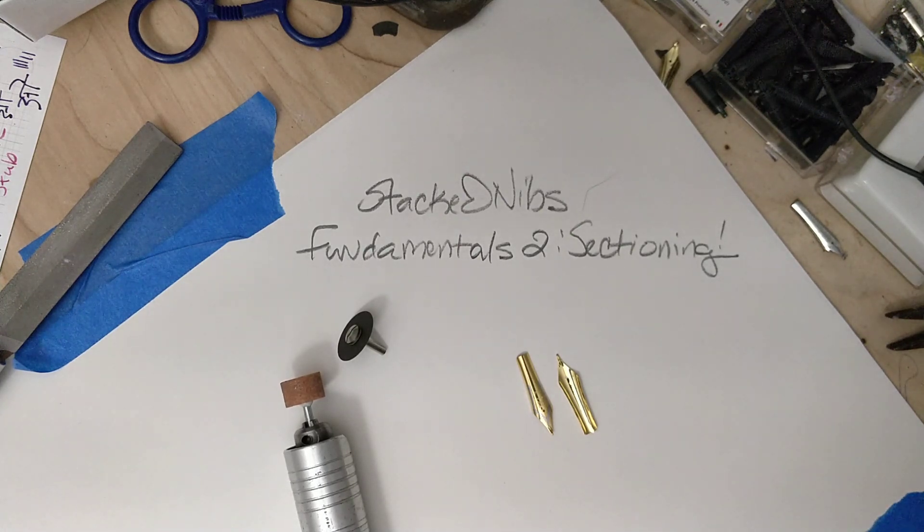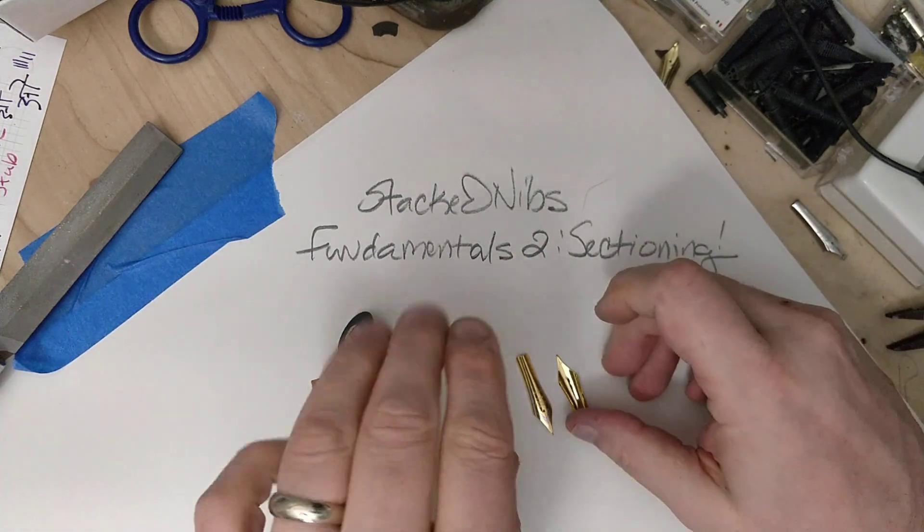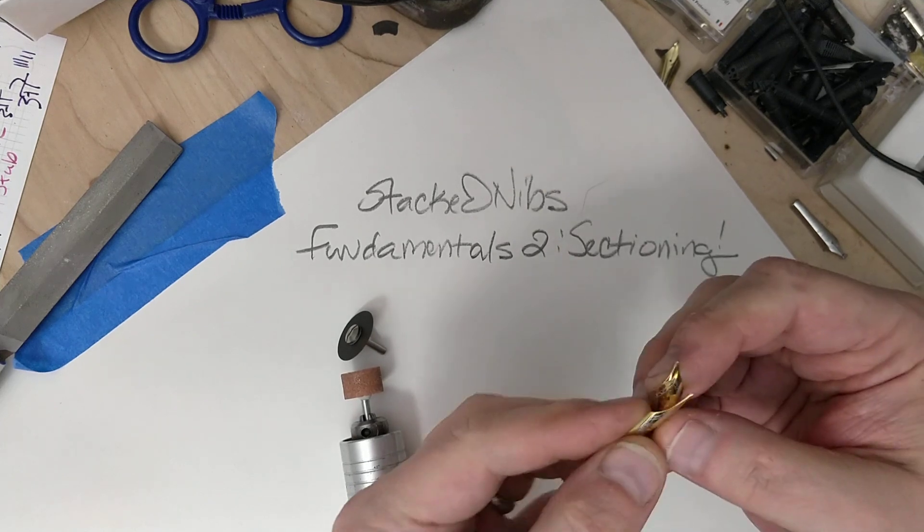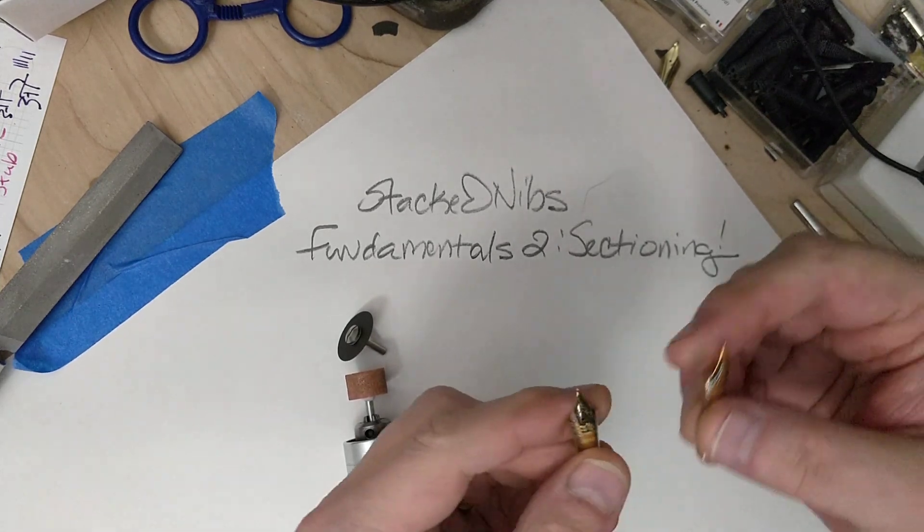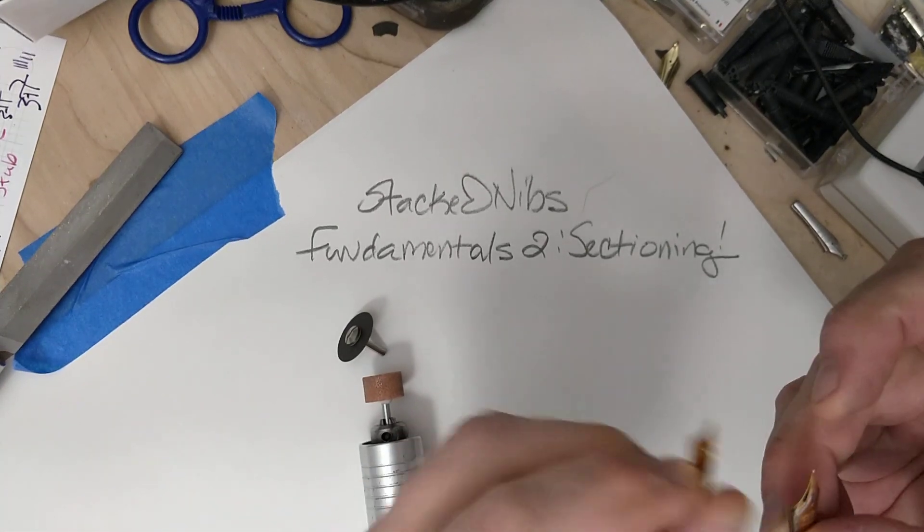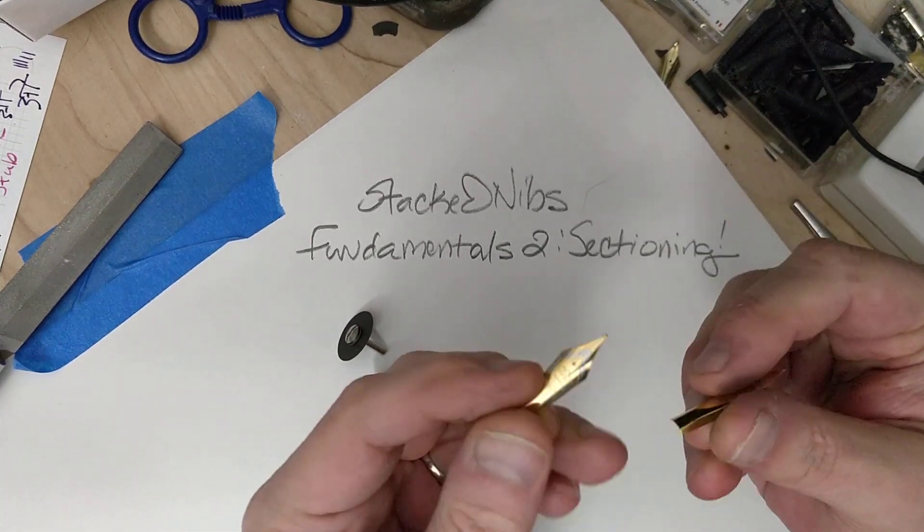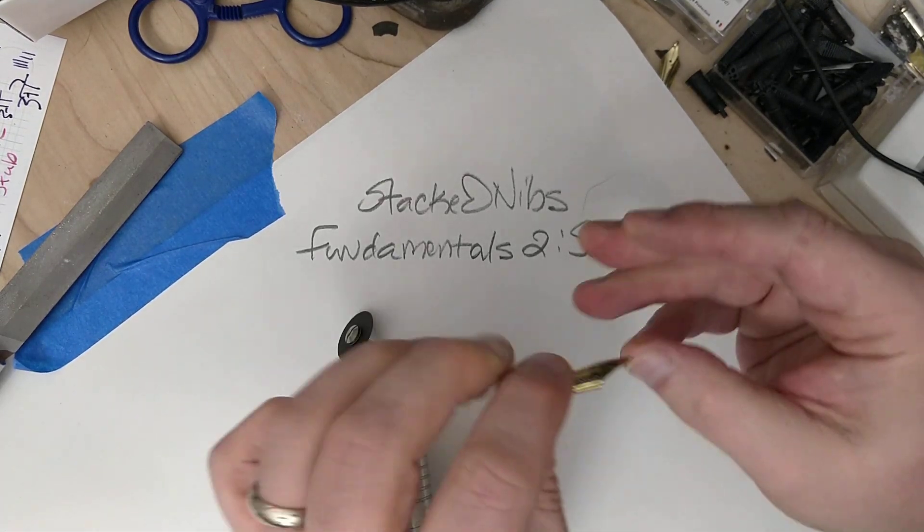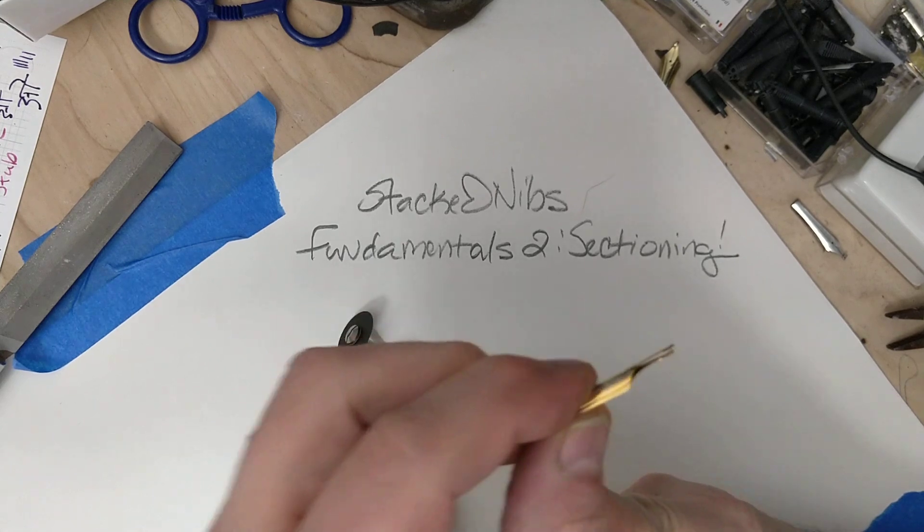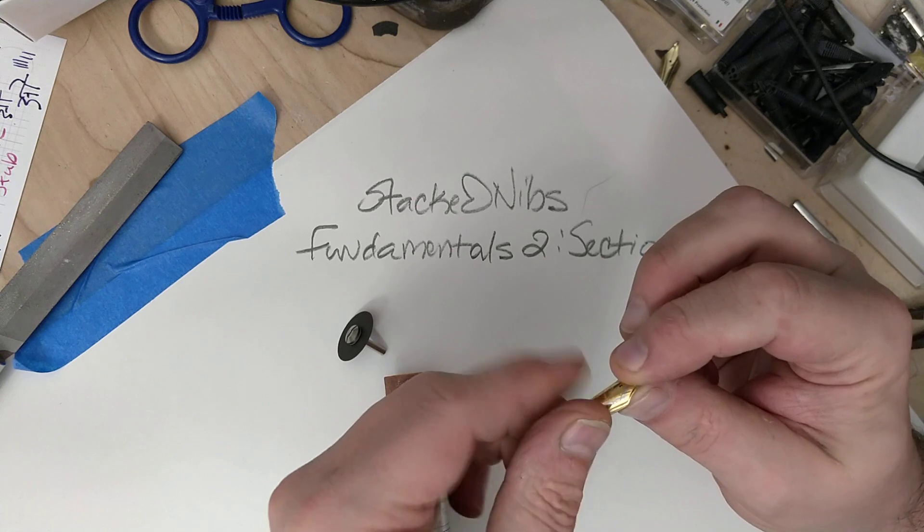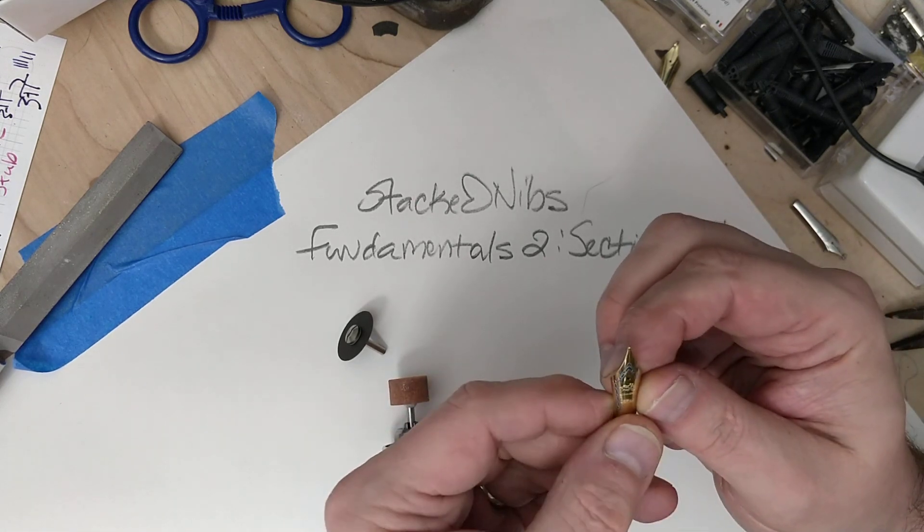If you didn't watch the Kisaki Nibs video, I'll let you know where we're starting here. I asked everybody in that video to practice stub nib grinding while leaving the tips on. So we're going to talk about two-layer forward-mounted nibs. I call it the Kisaki grind, or Kisaki nib.